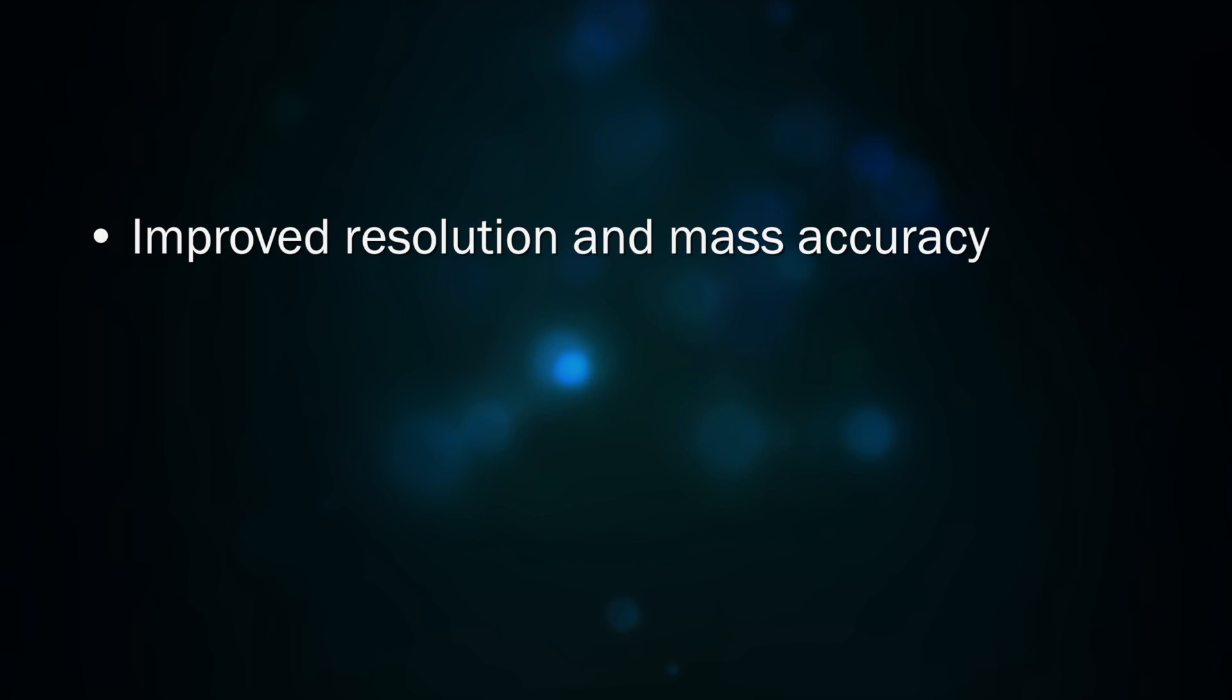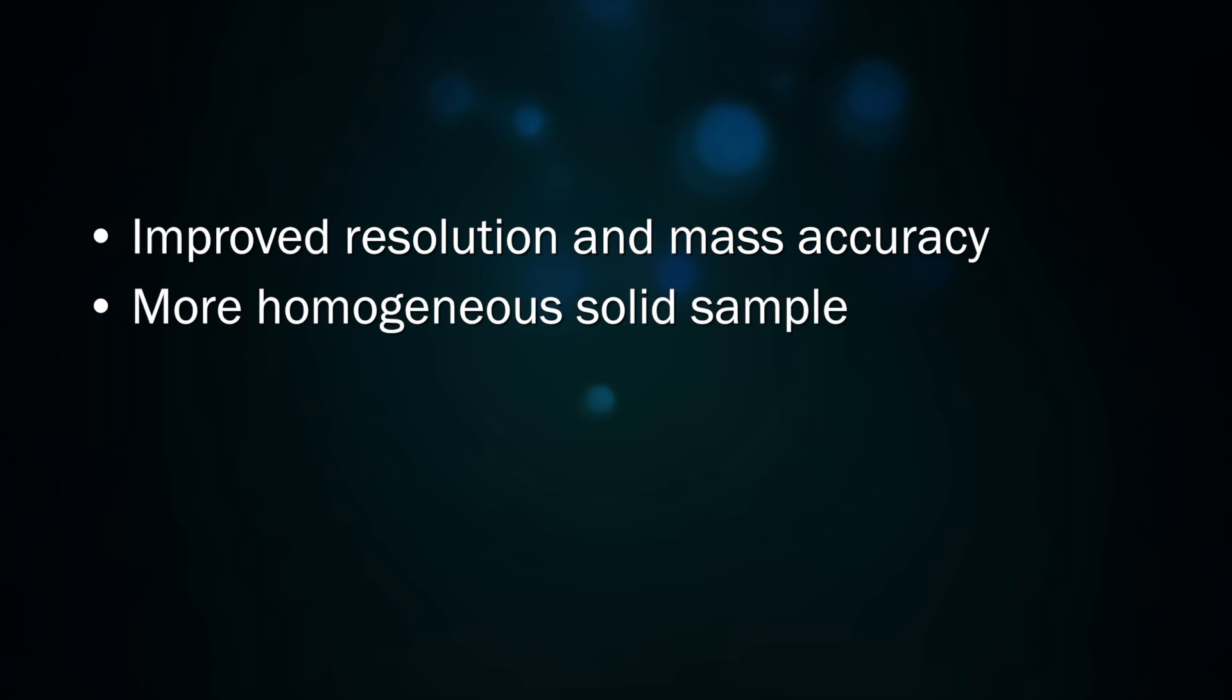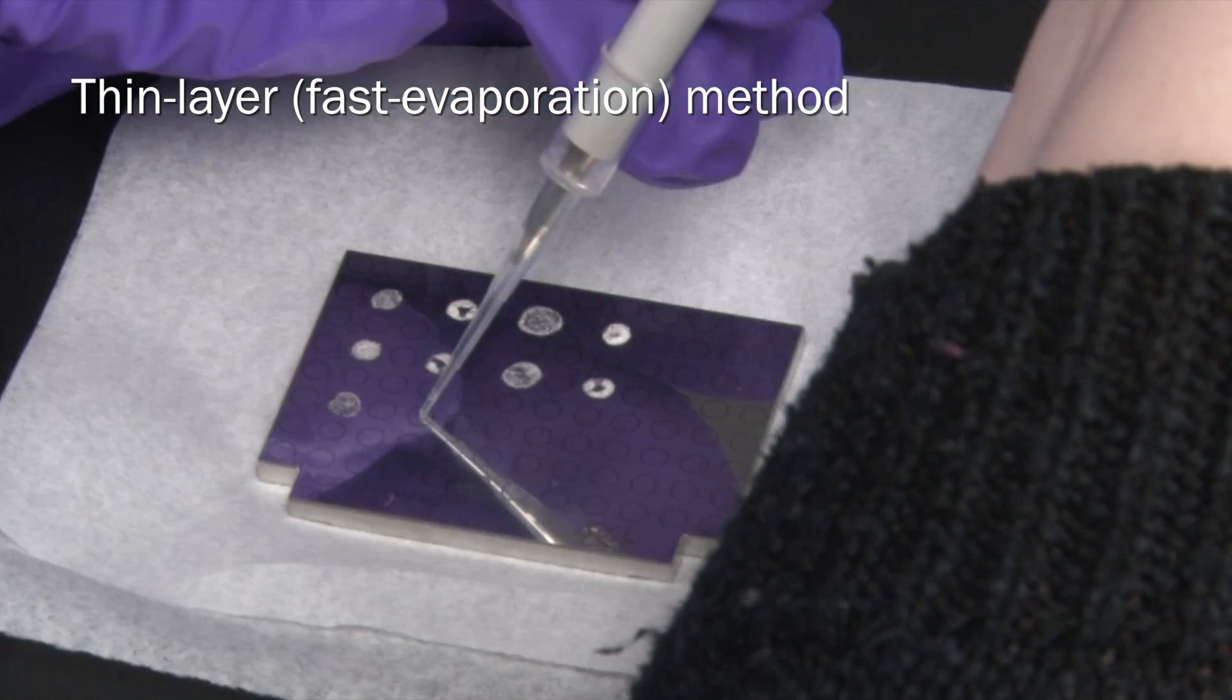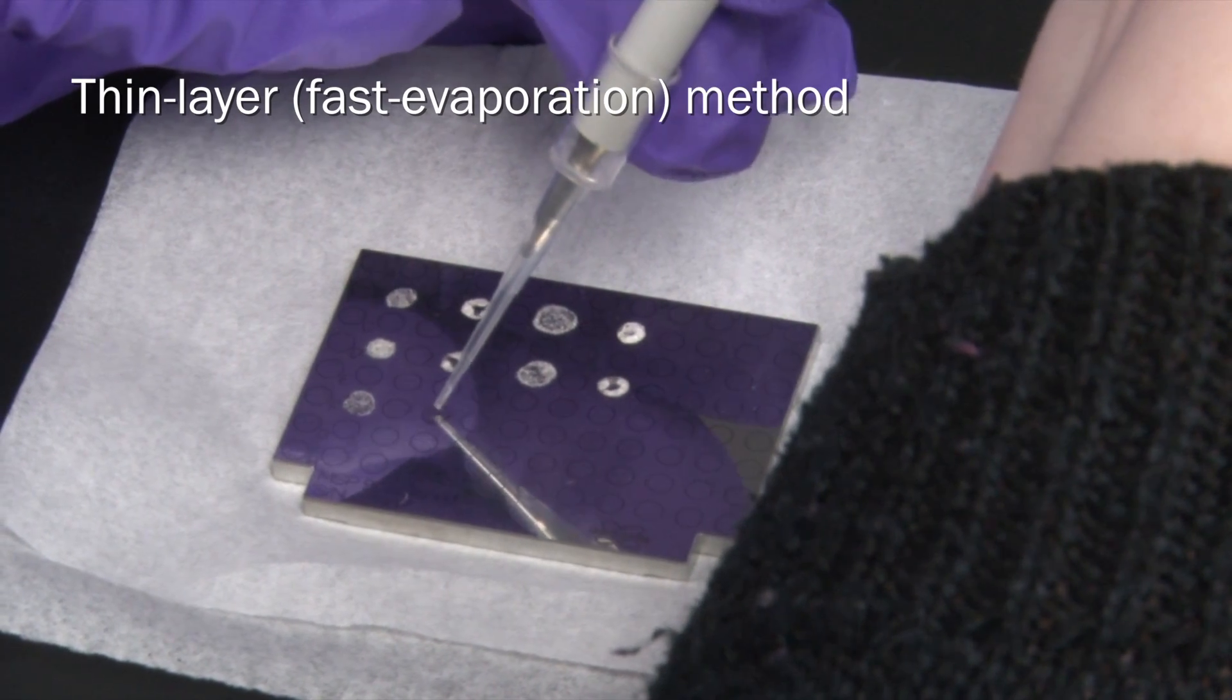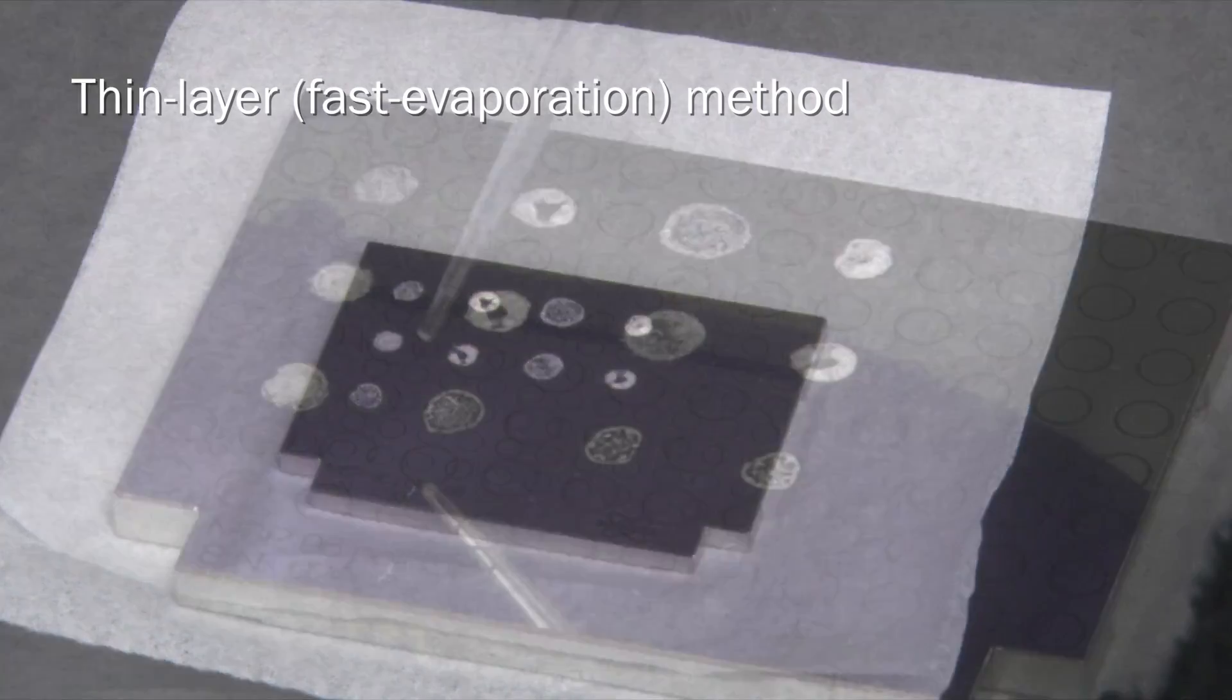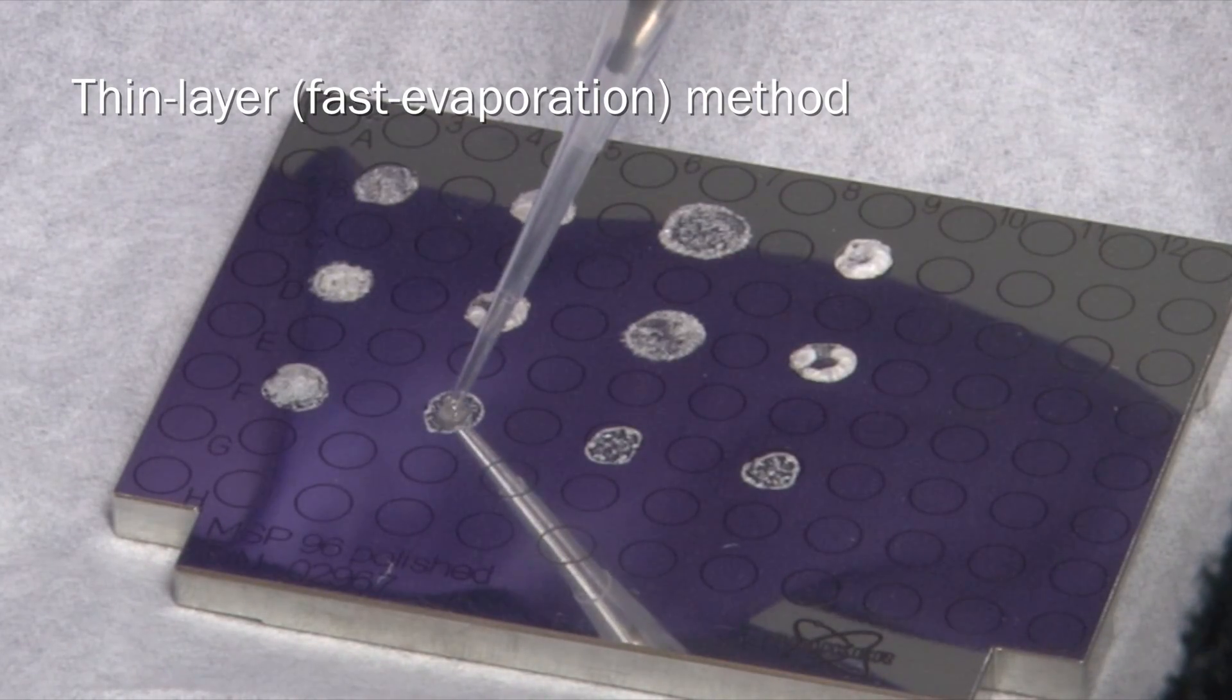In samples where the resolution and mass accuracy are critical, sometimes improvements can be found by making a more homogeneous solid sample. In the thin layer, or fast evaporation method, the matrix and analyte are mixed into very volatile solvents such as methanol or acetone. The matrix is first applied and allowed to dry into a very thin, uniform layer. The analyte solution is then applied on top of the dried matrix.